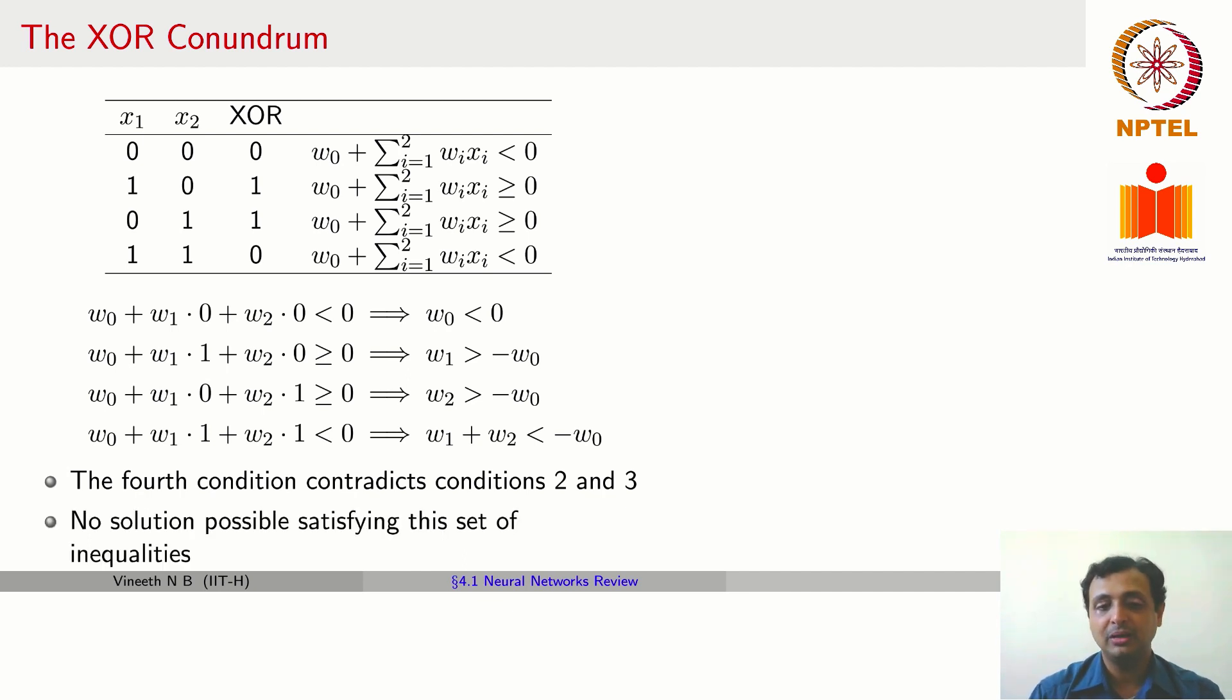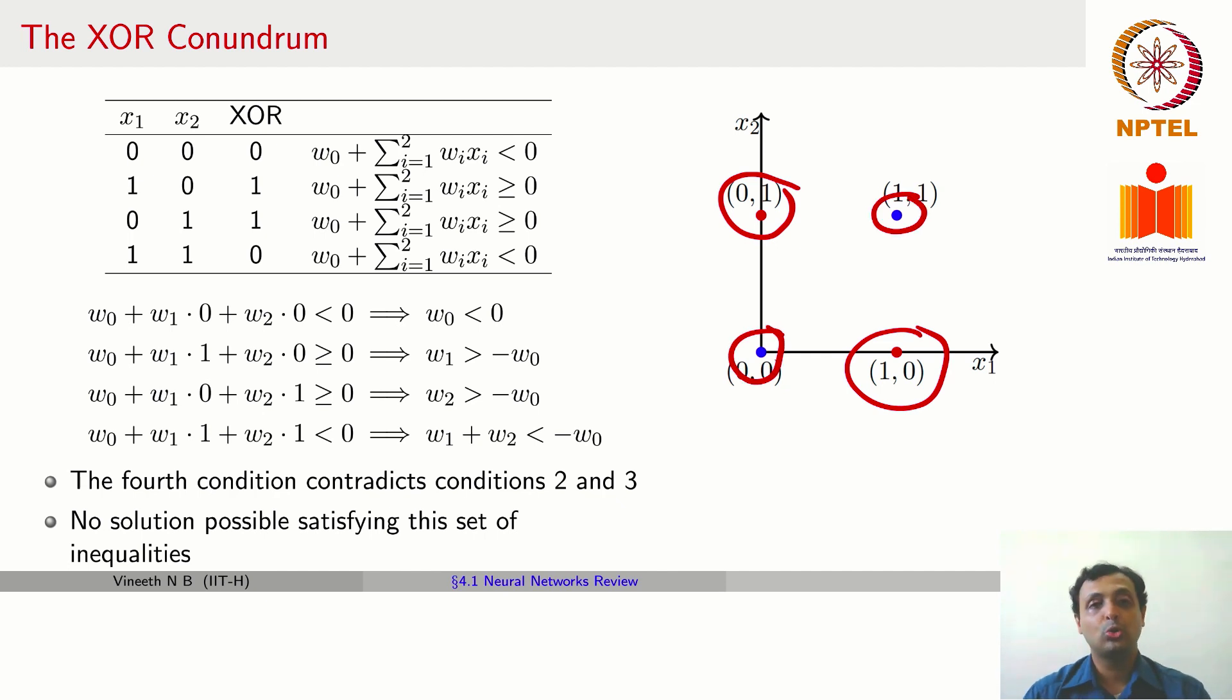Also visually speaking, you have the XOR problem to be represented as you want these two elements which are 0,1 and 1,0 to have a label to be 1, and you have these two elements 0,0 and 1,1 to have a label to be 0. As we said, a perceptron simply embodies a line, and if you draw a line here, you are going to get this element wrong, and if you draw a line here, you are going to get this element wrong.